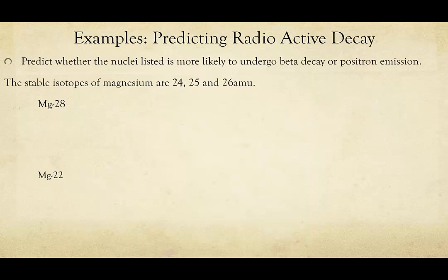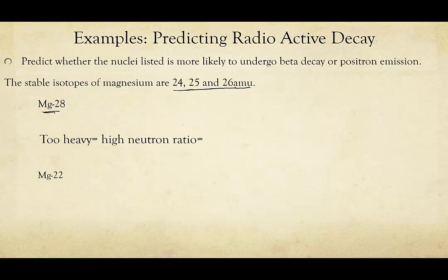Let's do two examples. Predict whether each nuclei will undergo beta decay or positron emission. Here I've given you the stable nuclei of magnesium, so we know that all the decay processes are going to happen in a way that gets us closer to this ratio of protons to neutrons. Let's take magnesium-28. Magnesium-28 is higher than the ideal masses, and therefore it is too heavy — in other words, there are too many neutrons.